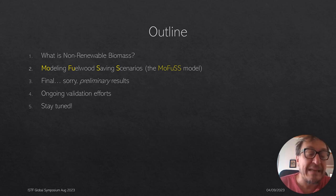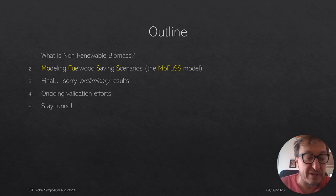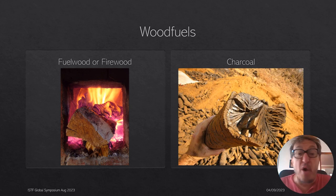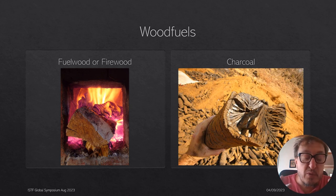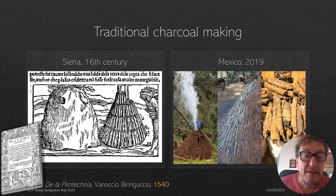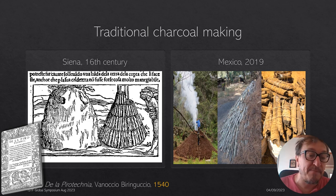We're dealing with traditional wood fuels — meaning wood that is just extracted from the landscape or gathered from the margin of a river, from cropland, or charcoal that is made in traditional ways. In fact, the way charcoal is being made now in traditional ways is exactly the same as it has been made for the last 500 years. This is not to be confused with modern wood energy, which requires more complex modeling with transport and much more complex end-use facilities.